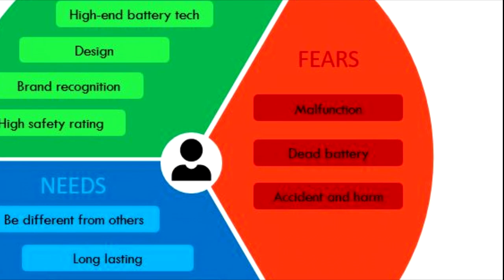Moving on to the fears — the risks customers would consider before switching to our product. First is the fear of malfunction: since the product is autonomous, human control is limited, increasing concerns about malfunction. Second is the fear of dead batteries: customers fear having to constantly monitor battery levels, which could disrupt their work processes. Finally, there is the fear of accidents or harm — since human control is limited, users would have decreased ability to take control of the machine in emergencies or if it starts to malfunction.